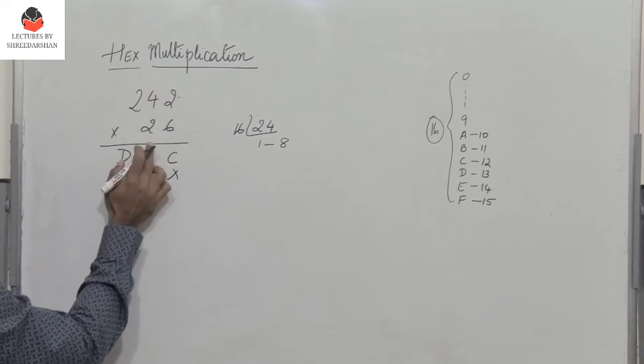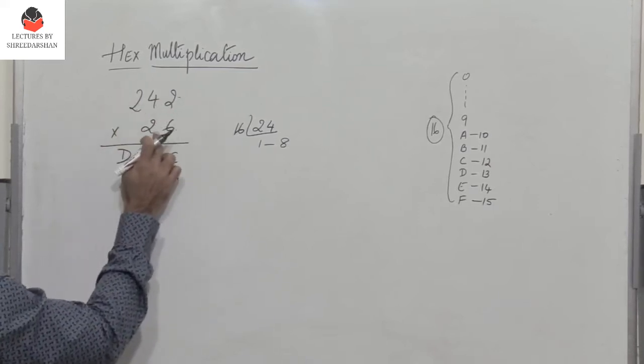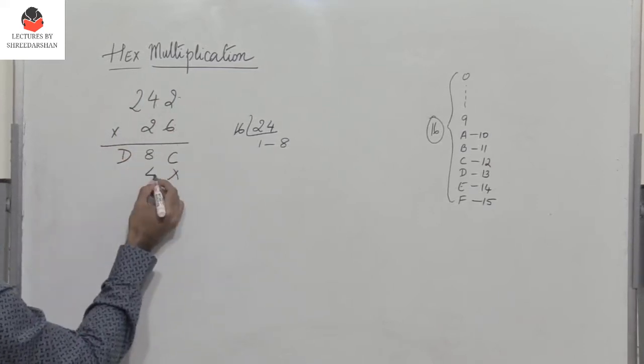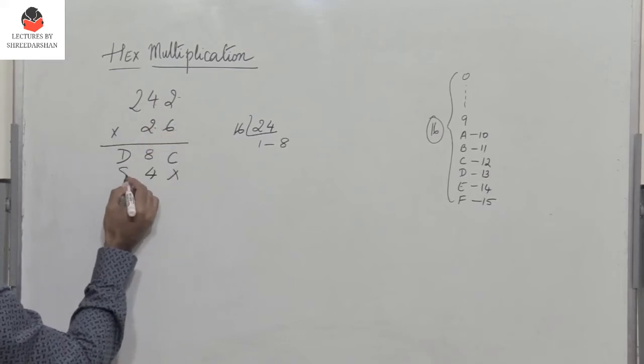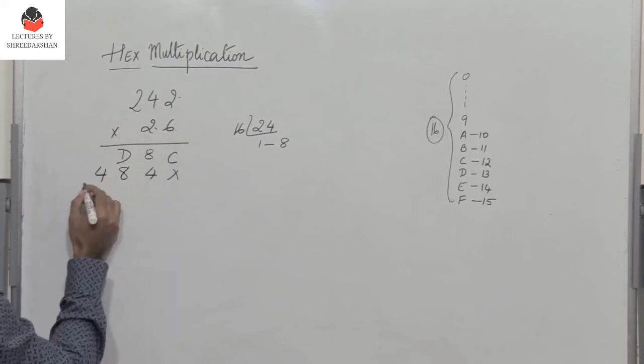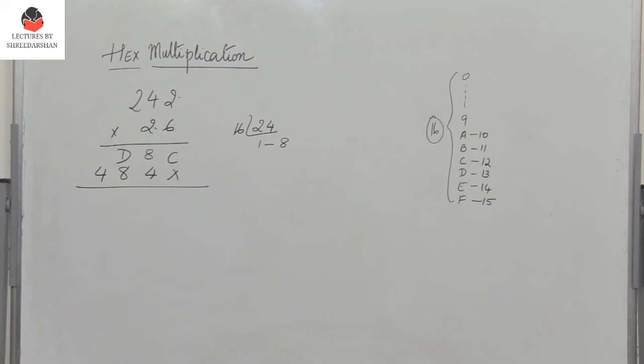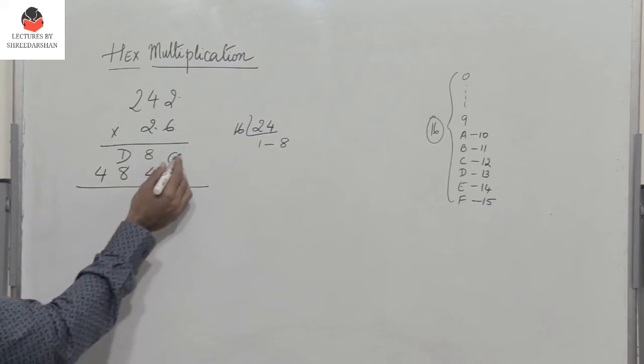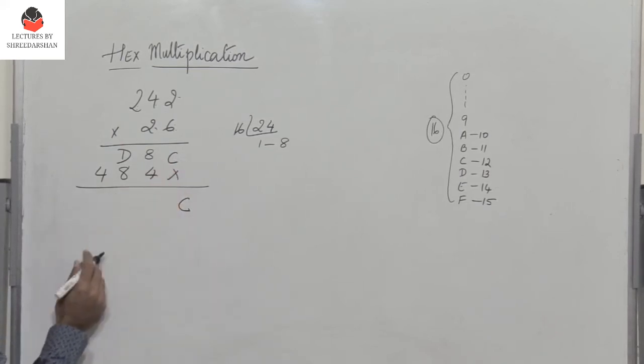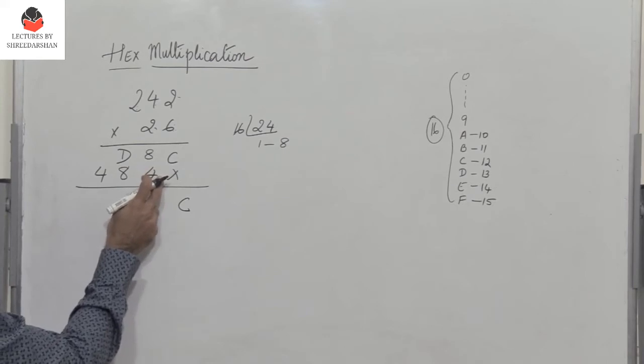Now I proceed with multiplying the given number by 2. 2 into 2 is 4. 4 into 2 is 8. 2 into 2 is 4. Now I have these two numbers. So this is C.